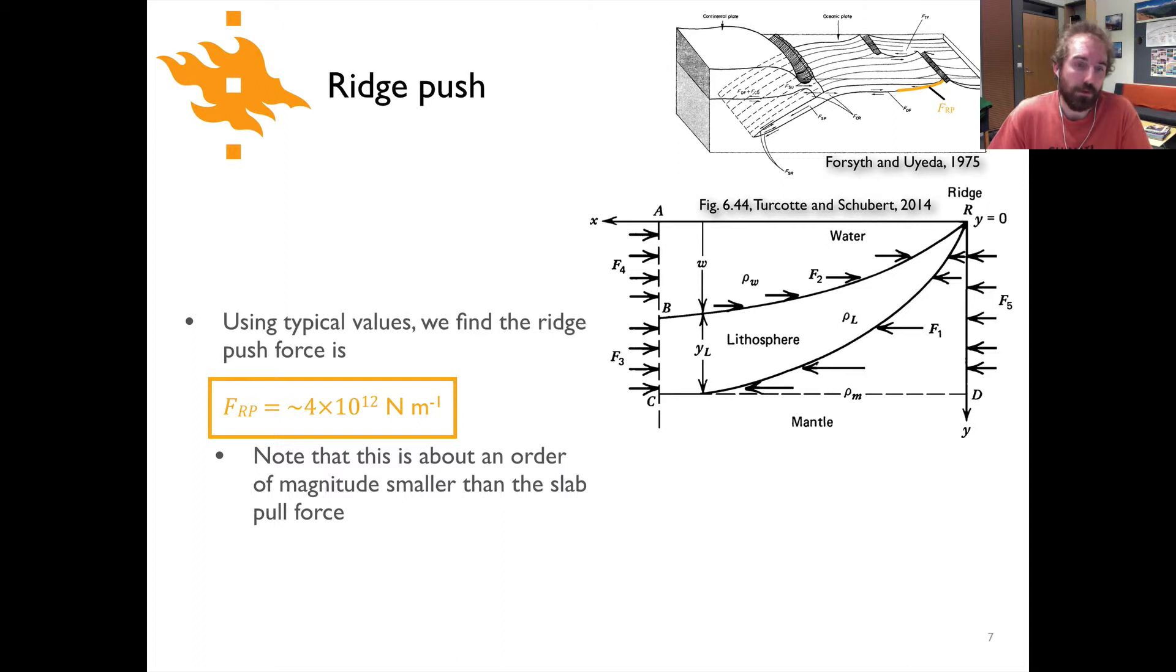And if we were to again use our typical values and plug in some numbers here, we come up with a ridge push force sits on the order of 4 times 10 to the 12 newtons per meter. And if you remember from the previous lecture about the slab pull force, this is about an order of magnitude smaller than slab pull.